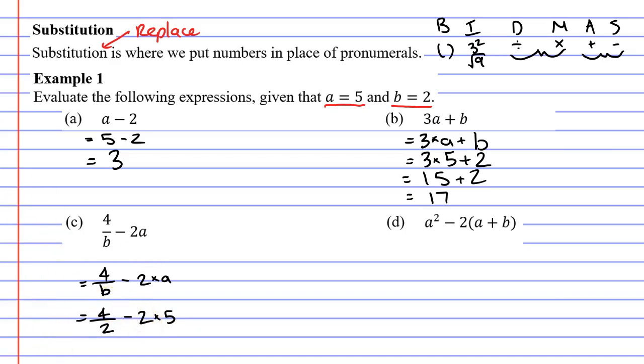Following the order of operations, we have division 4 divide 2, multiplication 2 times 5, and subtraction. Subtraction will definitely come last. So what do we do first, division or multiplication? We'll do division first because it's closer to the left. 4 divide 2 is 2 minus 2 times 5. Next we've got subtraction and multiplication. Multiplication comes before subtraction. 2 times 5 is 10. That gives us 2 minus 10, which gives us negative 8.